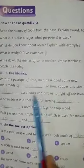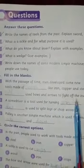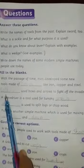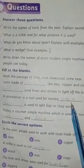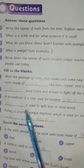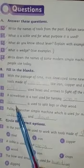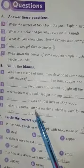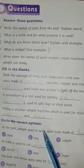Number two: soldiers used bows and arrows to fight off the invading armies. Number three: screwdriver is a tool used for turning screws. Number four: axe is used to split logs or chop wood. Number five: pulley is another simple machine which is used for moving the things up and down.